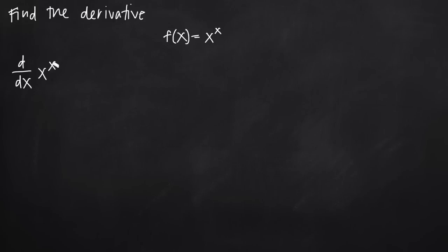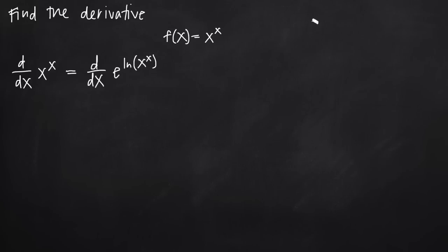Our first step in solving this problem is to set this equal to d/dx of e to the natural log of quantity x to the x. The reason we can do this is because e raised to the natural log of something — e and natural log cancel with one another. So e to the natural log of x to the x just gives us back x to the x. These two expressions are exactly equal and we haven't changed anything at all.